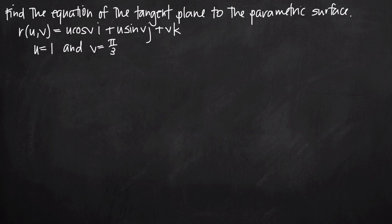In this video we're going to be talking about the tangent plane to the parametric surface. In this particular problem we've been asked to find the equation of the tangent plane to the parametric surface when the surface is given by the vector equation r of u and v, where u and v are parameter values. We've been asked to find the tangent plane at u equals one and v equals pi over three.